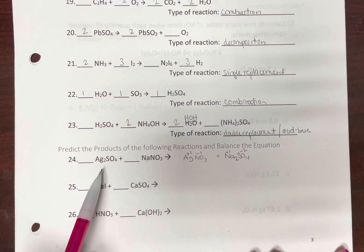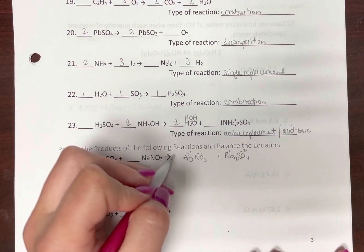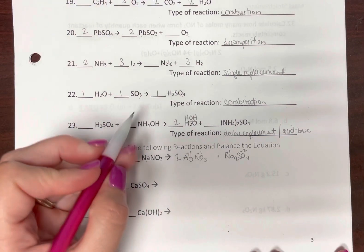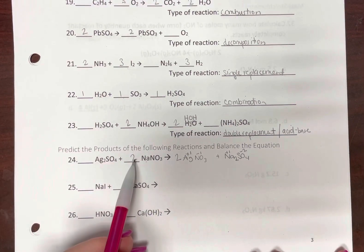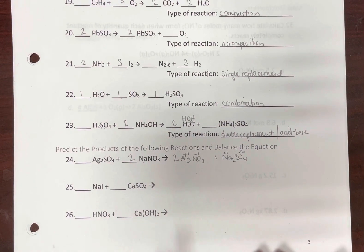Now let's balance this equation. There are two silvers, we need two silvers. Now two nitrates, two nitrates. Two sodiums, two sodiums. One sulfate, one sulfate.